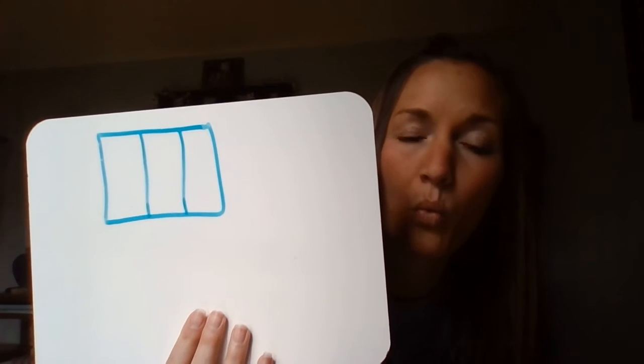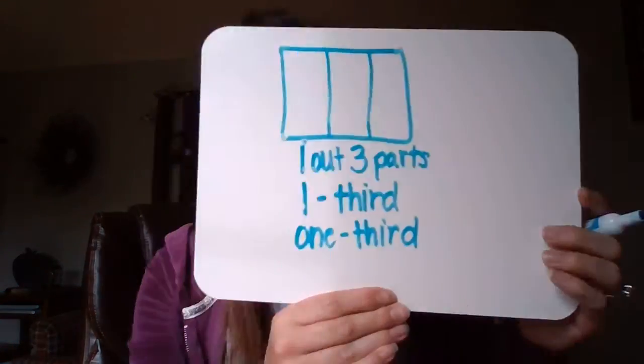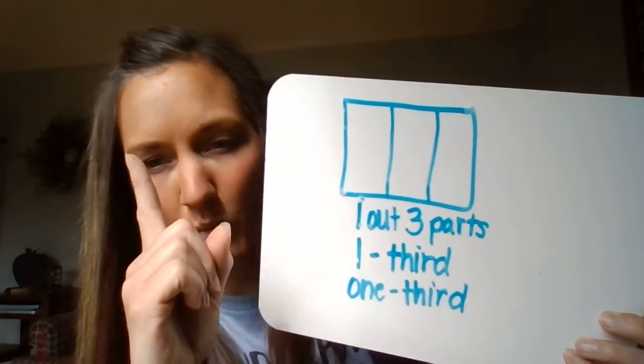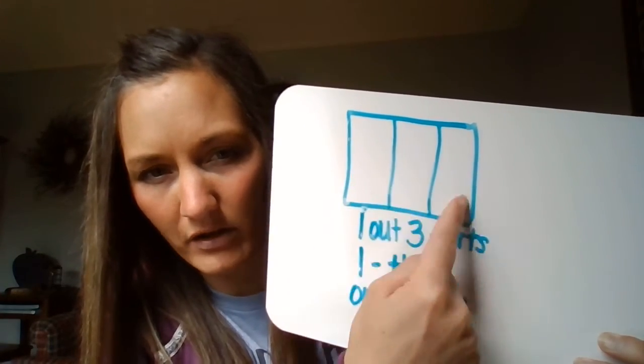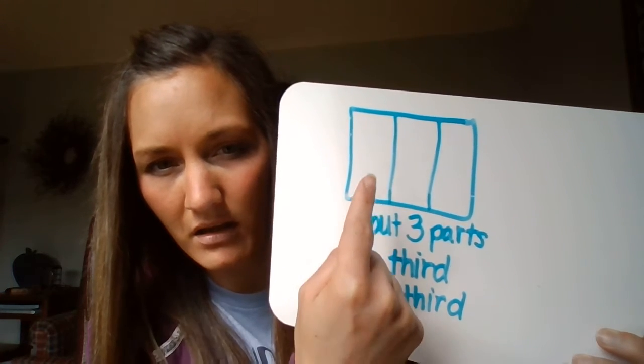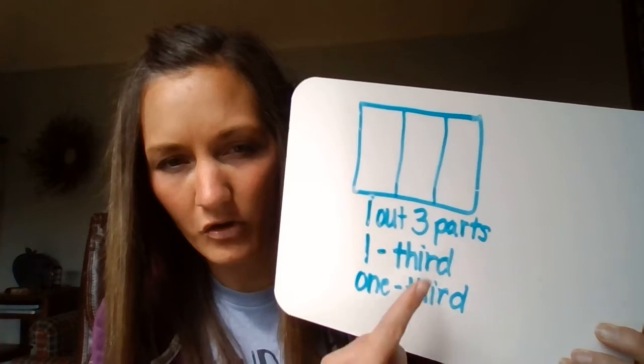Now we're going to name one share of this. So if I'm going to name one share, I have three parts. I could say one out of three parts. I could say one third with the number. I could put one third with just words. So if I'm choosing one share, it would be one out of three, which is the same as one third, or one third with just words.